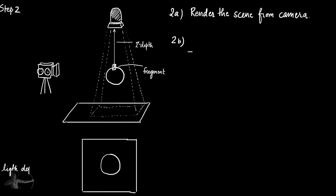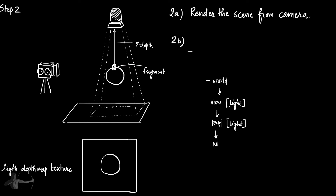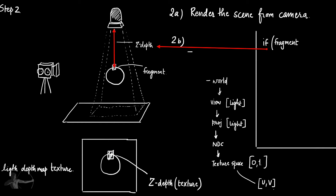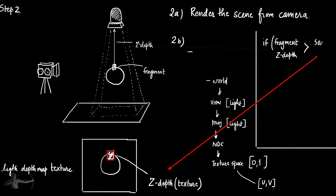To find which location in the texture to sample, we follow the same coordinate transform steps: world position → light view space → light projection space → NDC space → texture space. This gives us a location in the 0 to 1 range. We sample that location and read the z-depth from the texture. Now we have two values: the z-depth of the current fragment from the light, and the z-depth read from the texture.